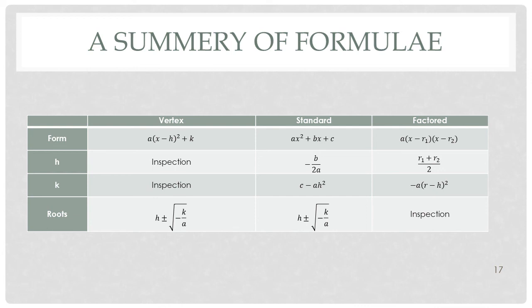Here is a summary of the formulas we have developed. For the vertex form, h and k are given to us, and the root is the vertex root equation. For the standard form, we have an equation for h, an equation for k, and we use the vertex root equation. For the factored form, h is just the mean of the roots, k follows a simple equation, and the roots are given to us.